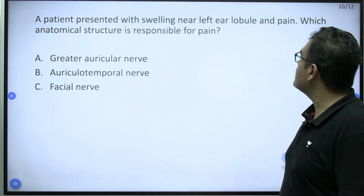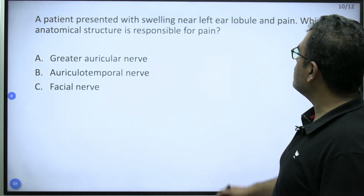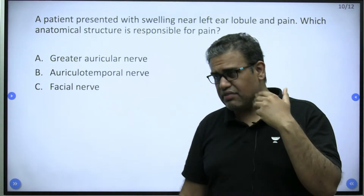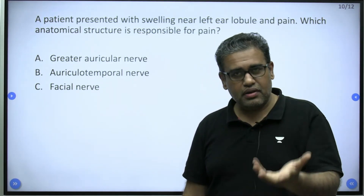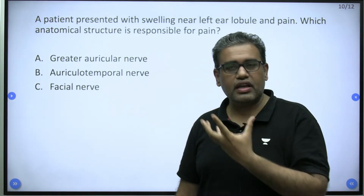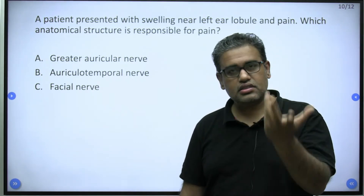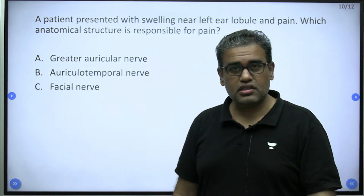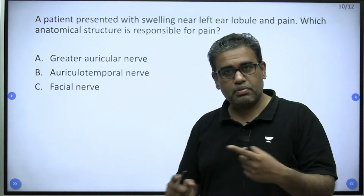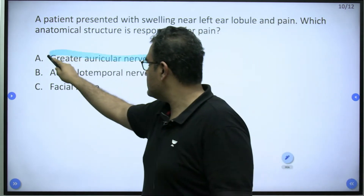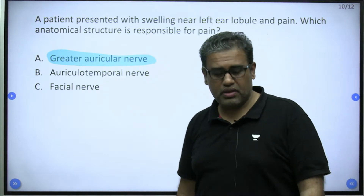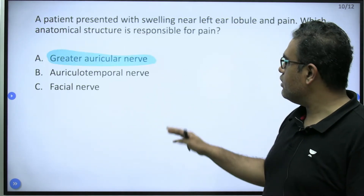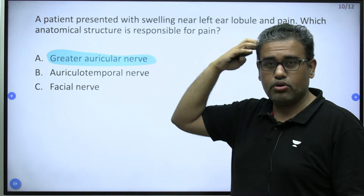A patient presented with swelling near the left ear lobule and pain. Pain means sensory. The ear lobule region is supplied by the great auricular nerve — all parts of the face are sensory-supplied by the trigeminal except the parotid region and the ear lobule area. So if you have studied the face, parotid gland, Frey's syndrome, or the supply of the ear lobule, the answer is the great auricular nerve. The auriculotemporal nerve lies higher up.